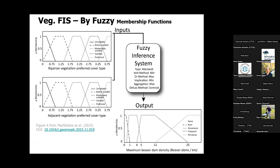The fuzzy inference system uses membership functions. On the horizontal axis we have values from 0 to 4 representing those vegetation categories. These are fuzzy numbers with overlap between joining categories — they're not crisp because we feel the categorical data has uncertainty. A fuzzy inference system allows us to use categorical data because it doesn't make this crisp assumption. This is enough information for people to understand it at this level.